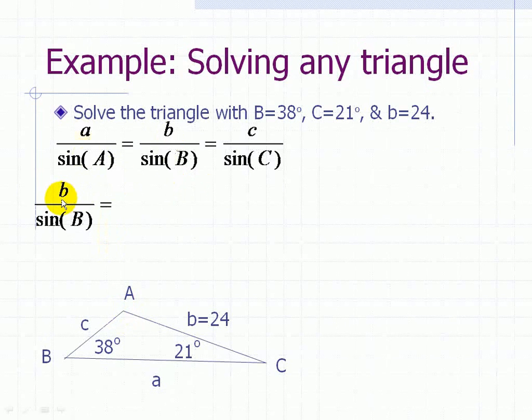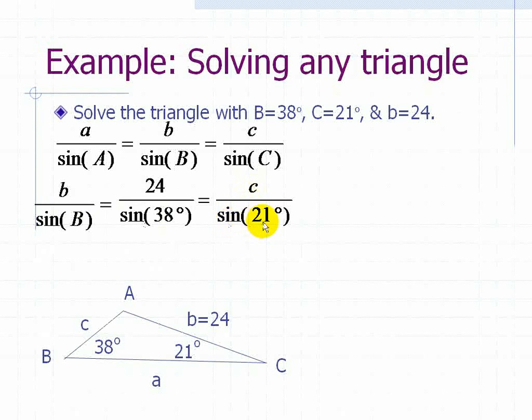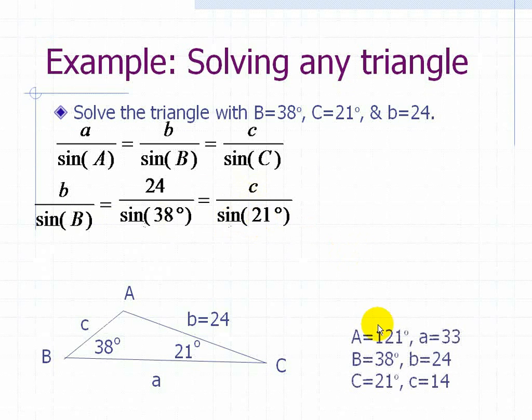So let's start off with what we're given. Where b is given as 24 and sine of B is equal to sine of 38 degrees. With that, we can solve for little c since the angle C is given as 21 degrees. After performing this calculation right here, you get the final answer of little c to be 14.